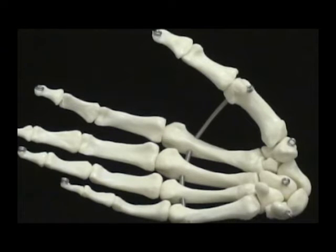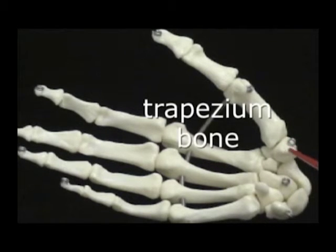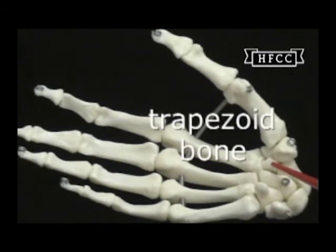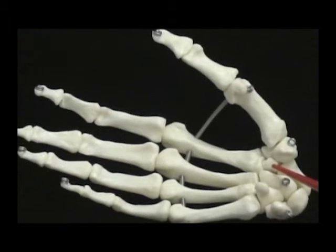Going through those that articulate with the phalanges, first here is the trapezium located at the base of the thumb. Then going to the index finger, or the second digit, that's the trapezoid bone. Notice the difference between trapezium at the thumb and trapezoid at the base of the index, or second finger.